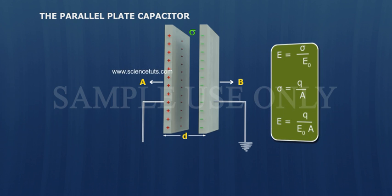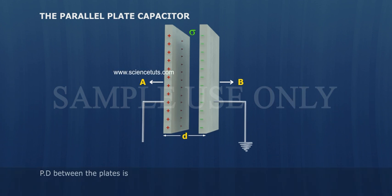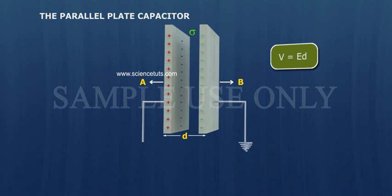Potential difference between the plates is V equals Ed, V equals Qd by ε₀A.